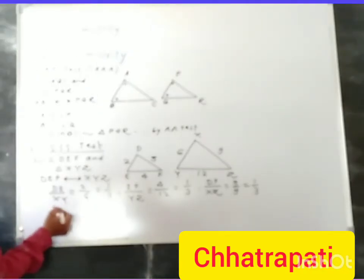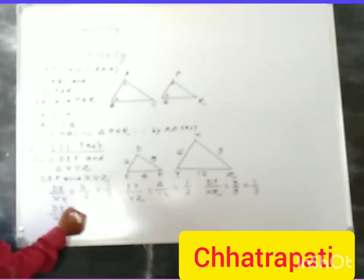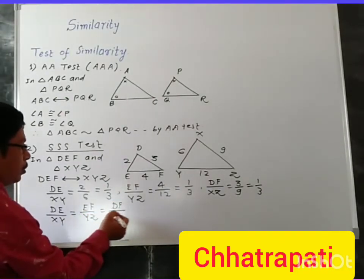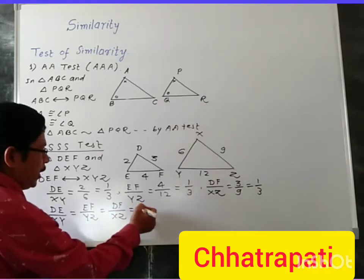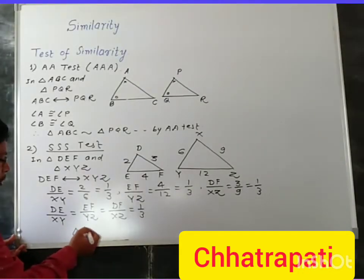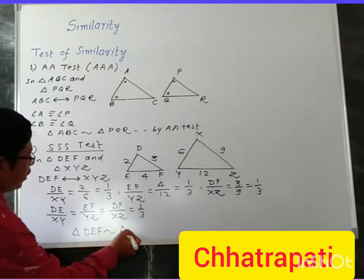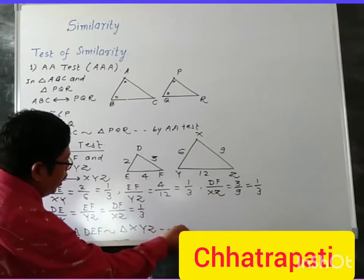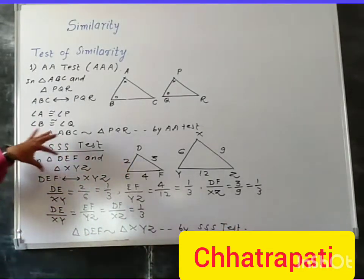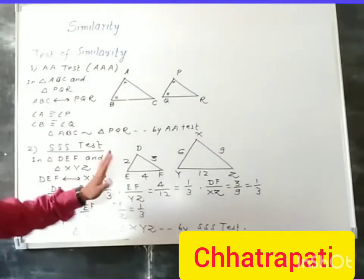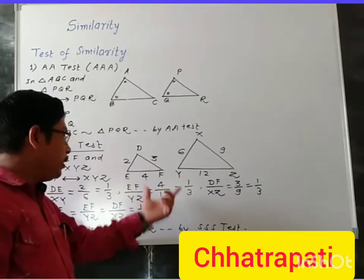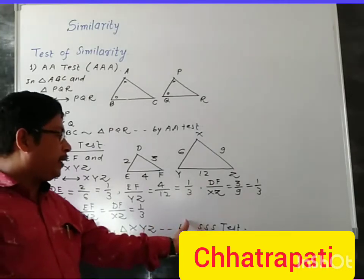So we find that all three ratios are equal: DE upon XY equals EF upon YZ equals DF upon XZ, all equal to 1 upon 3. So these two triangles are similar — triangle DEF is similar to triangle XYZ by the SSS test. For the given one-to-one correspondence, if three sides of one triangle are in proportion with the corresponding three sides of the other triangle, then the two triangles are said to be similar by the SSS test.